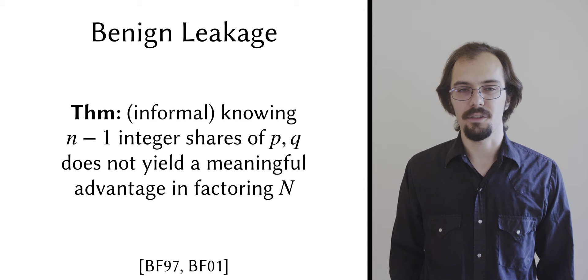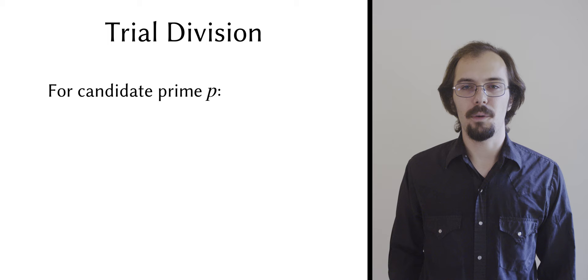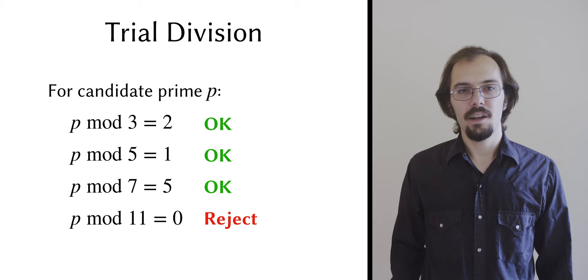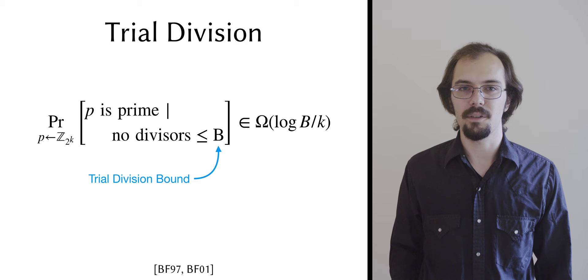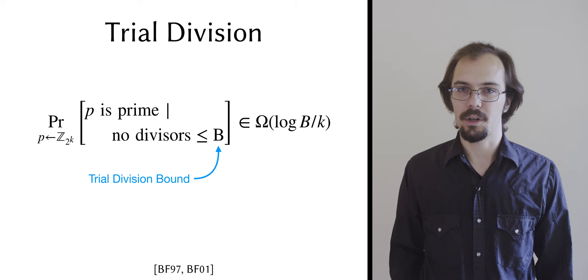Each candidate factor is divided by a sequence of small primes and rejected if it divides evenly. This is known as trial division. They show that if a k-bit candidate prime is sampled uniformly, and it passes trial division by all primes up to some bound capital B, then it's prime with probability in omega of log of b over k.